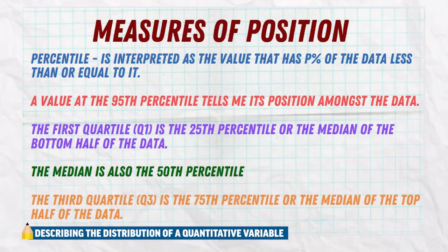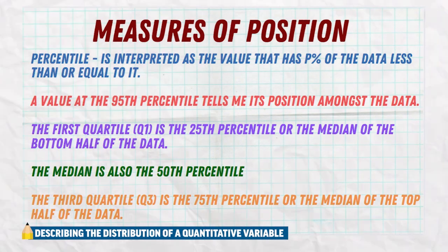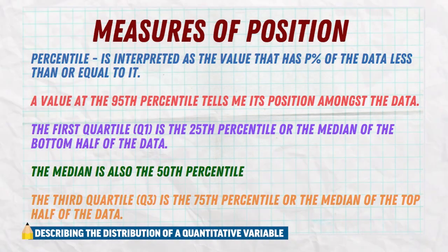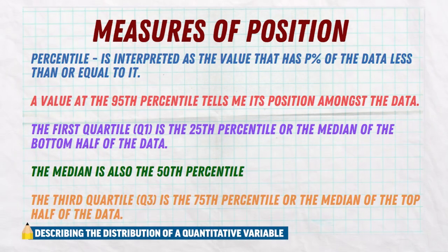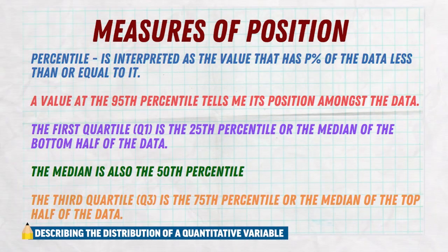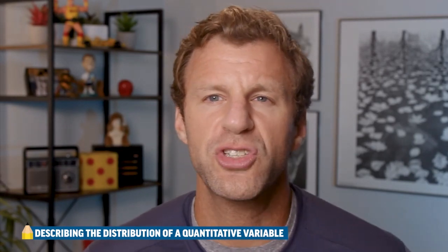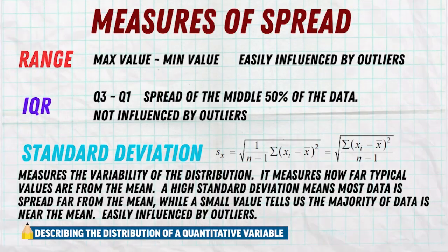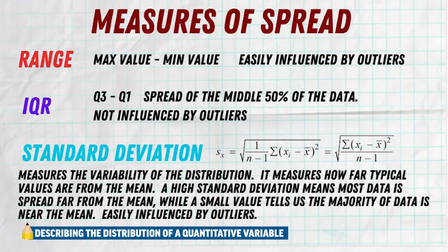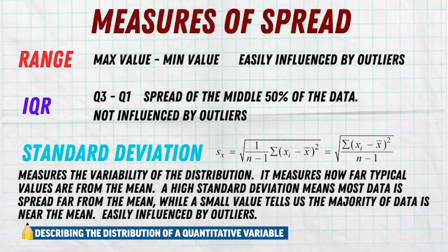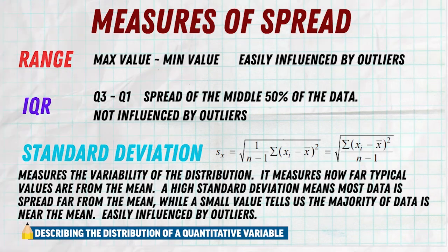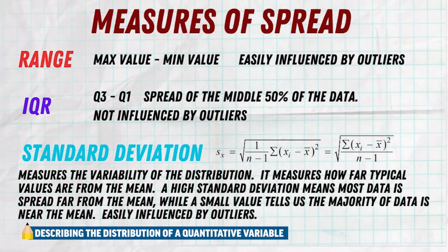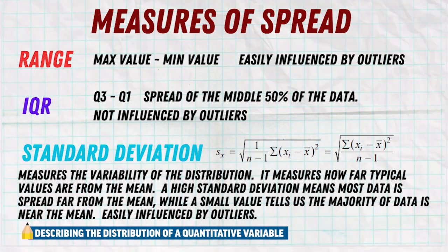These are just some important percentiles, but really a percentile can be any value. For example, the 42nd percentile has 42% of data at or below it. Percentiles specifically tell you where you fall in the data. Next, we have measures of spread. Range is simply your max minus your min, and it's very easily influenced by outliers — if you have an outlier, it's going to make your range look huge.